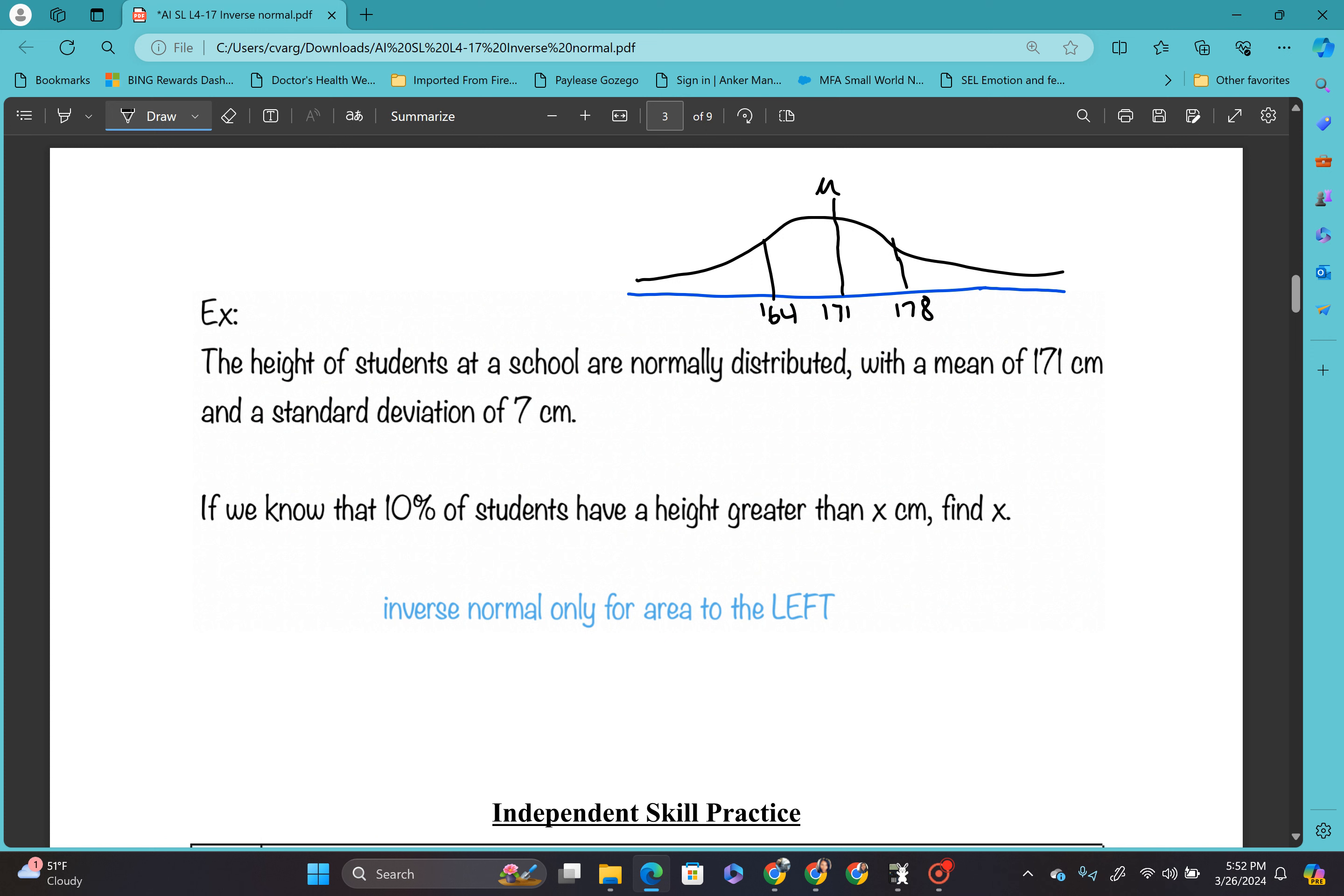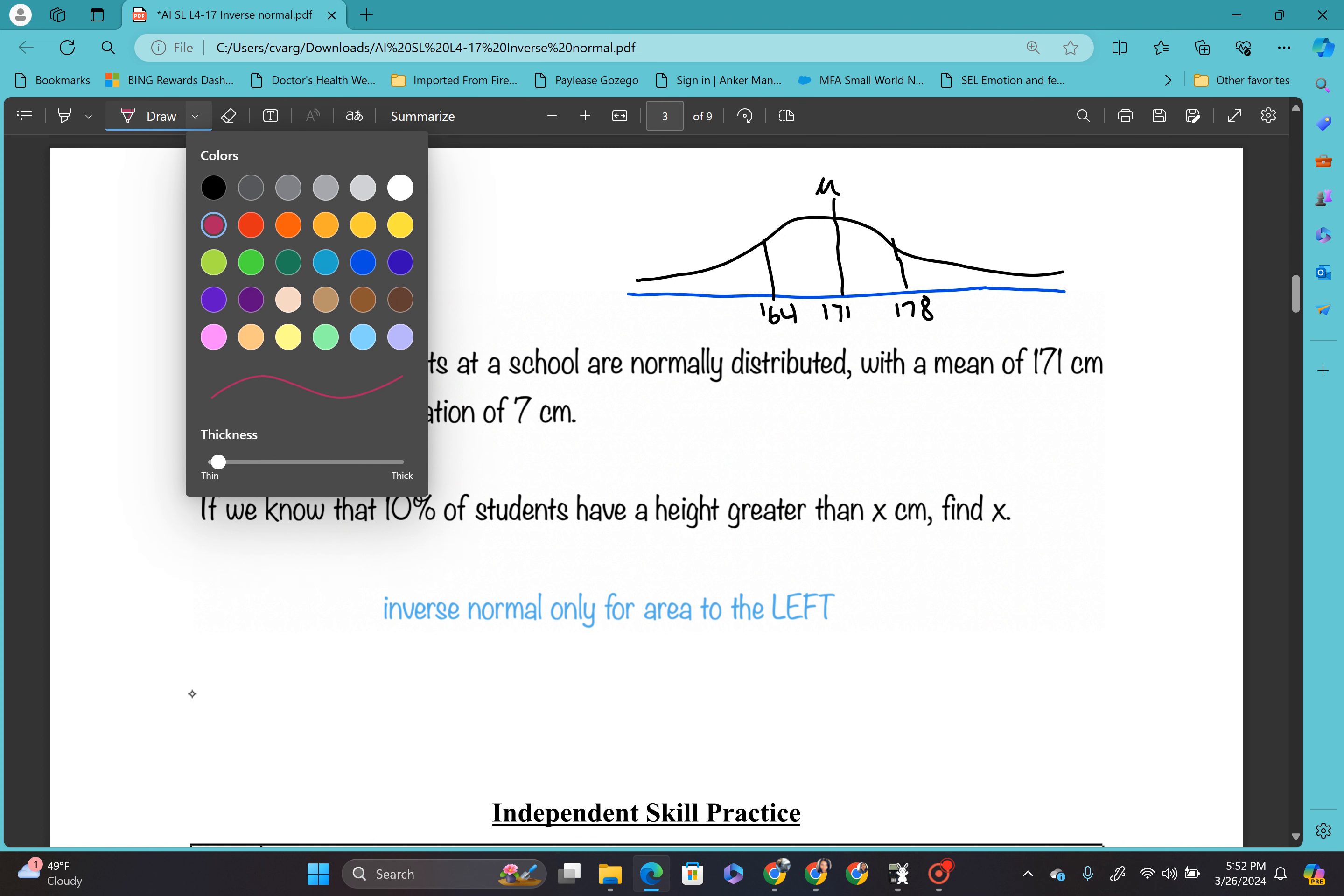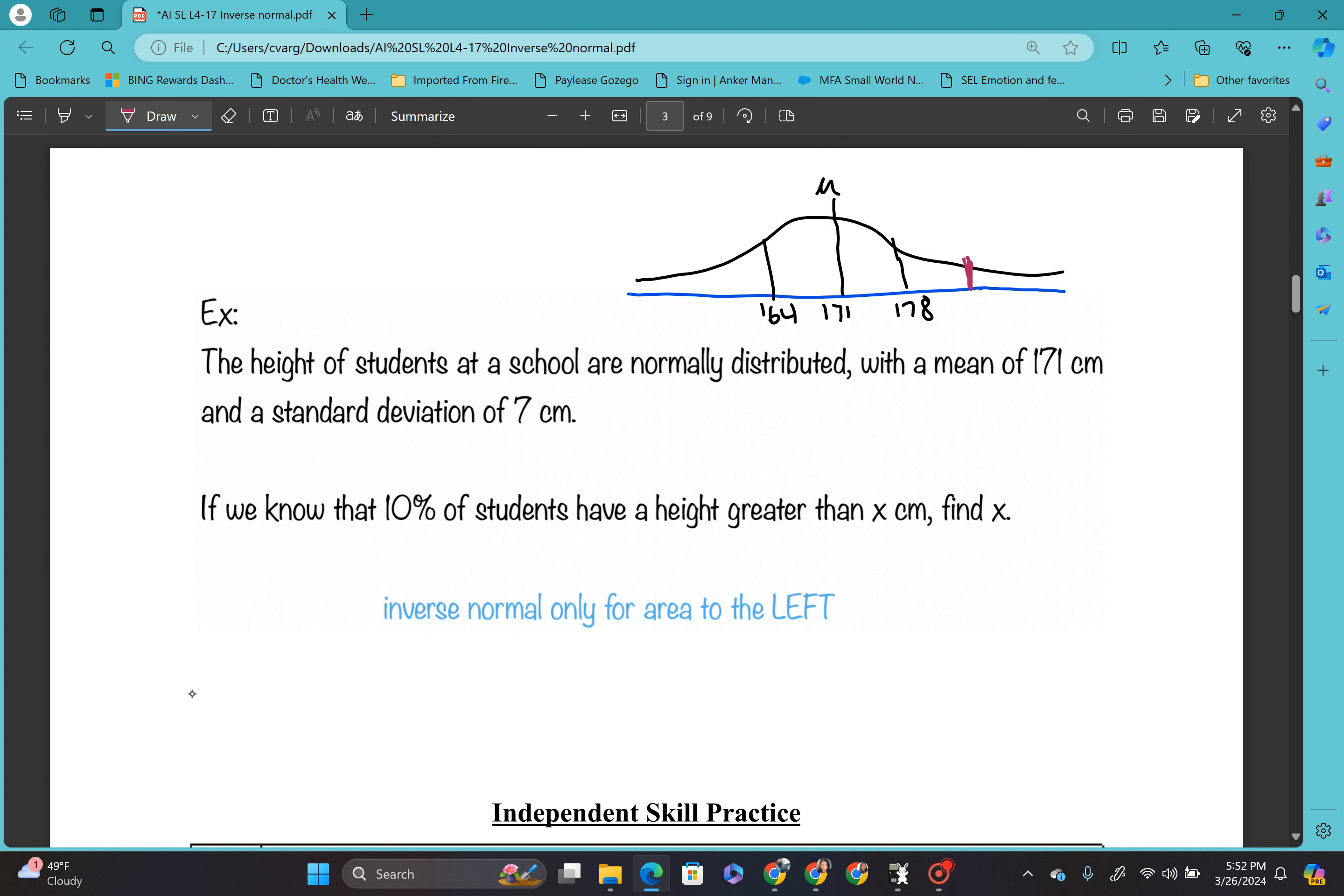All right, good. So now it's telling us that if we know that 10% of students have a height greater than x. So 10%. So somewhere over here. This is our 10% right here. So this here is 0.1 or 10% have a height greater than x. And they want us to find this value right here, find x.